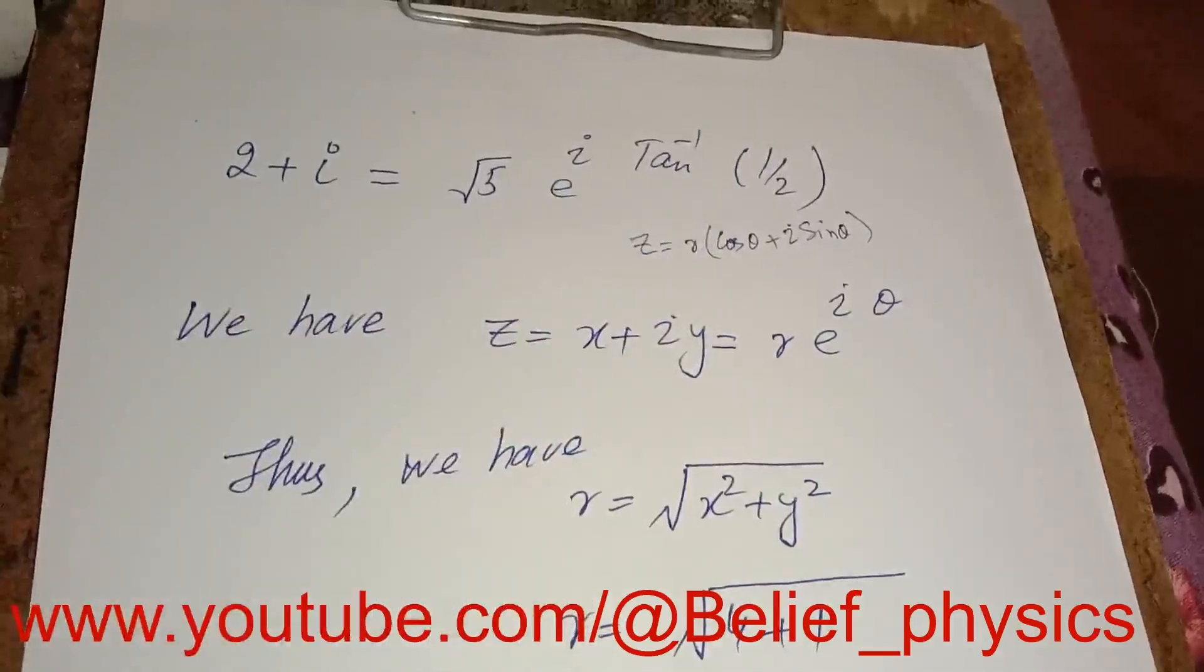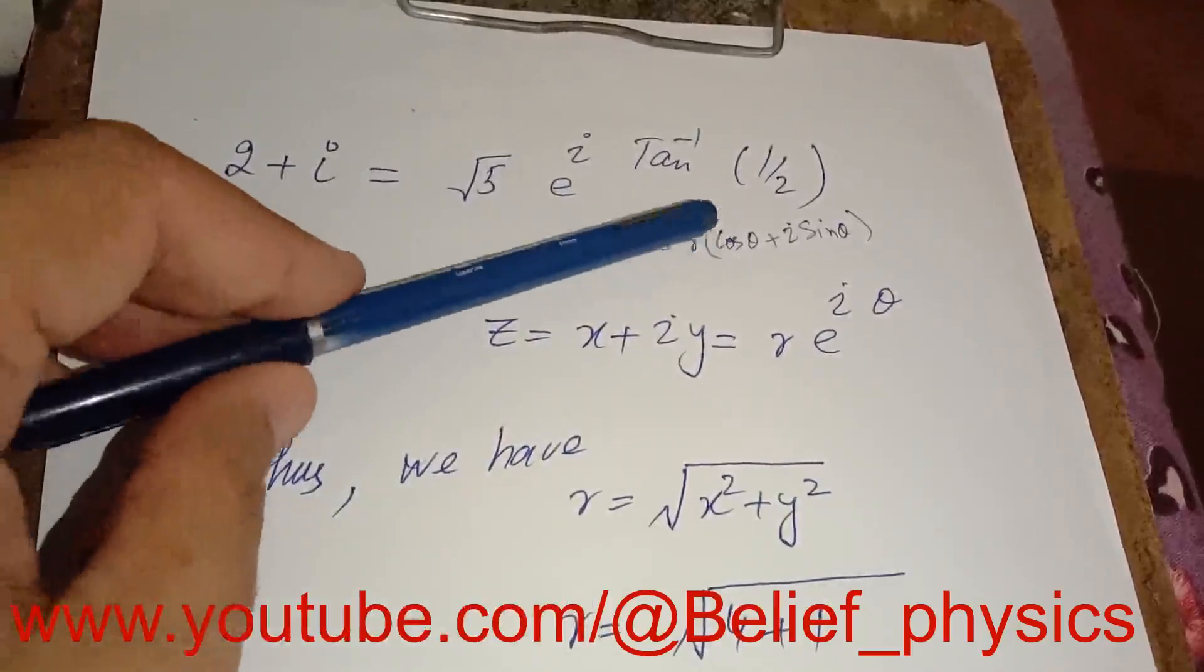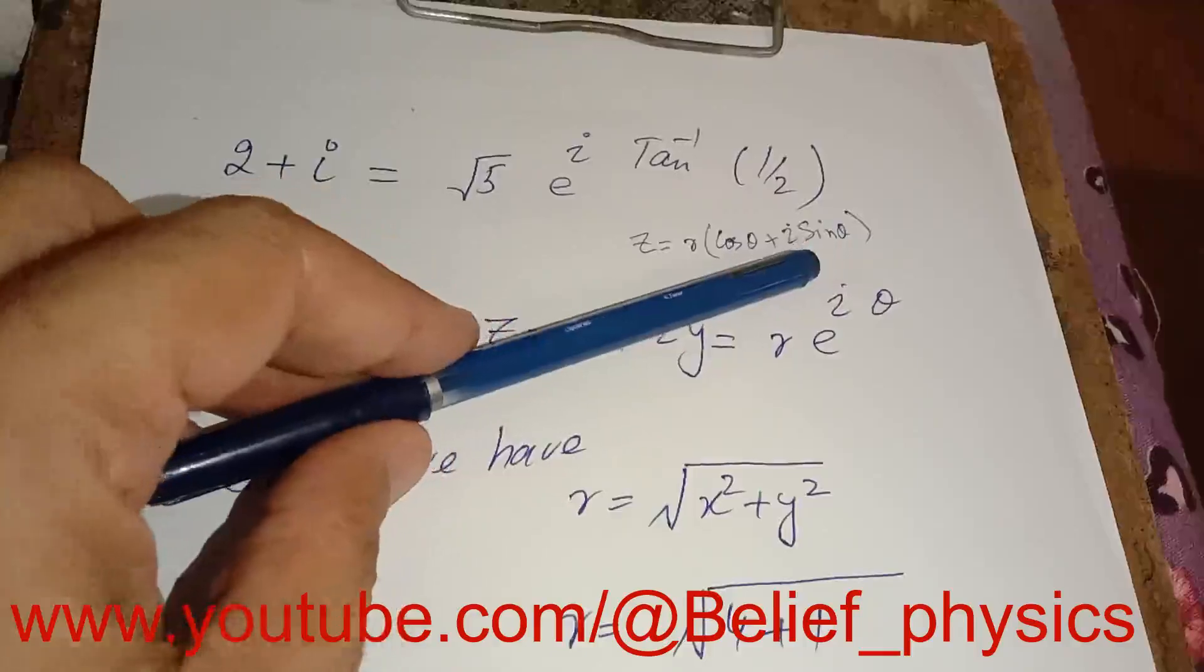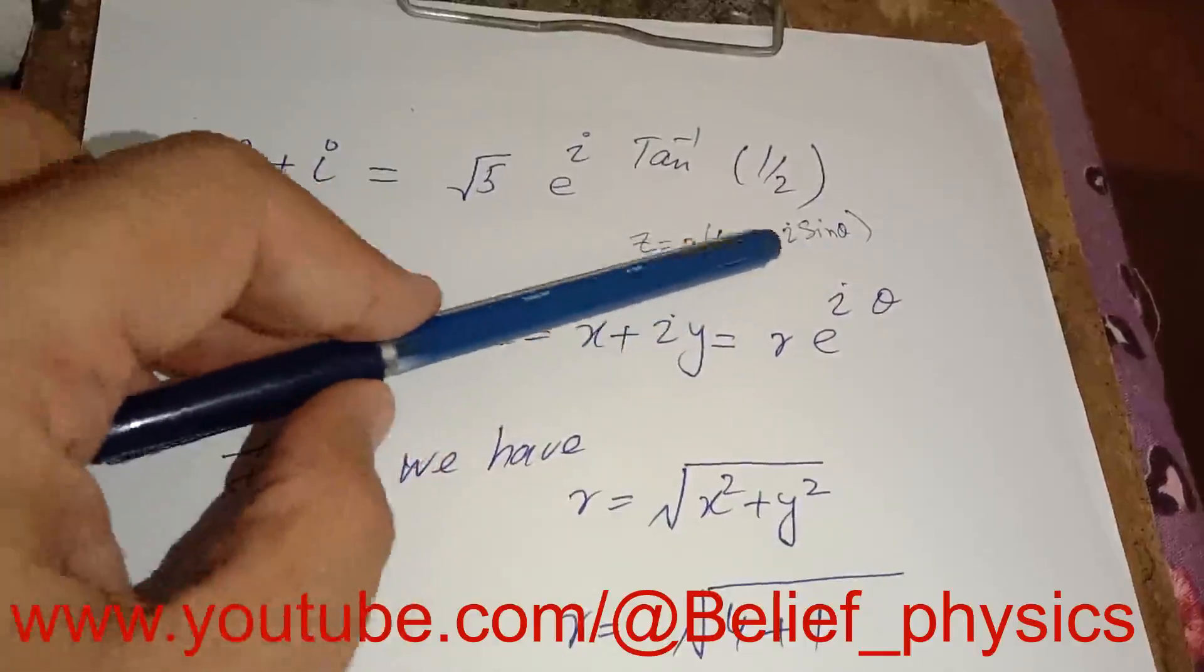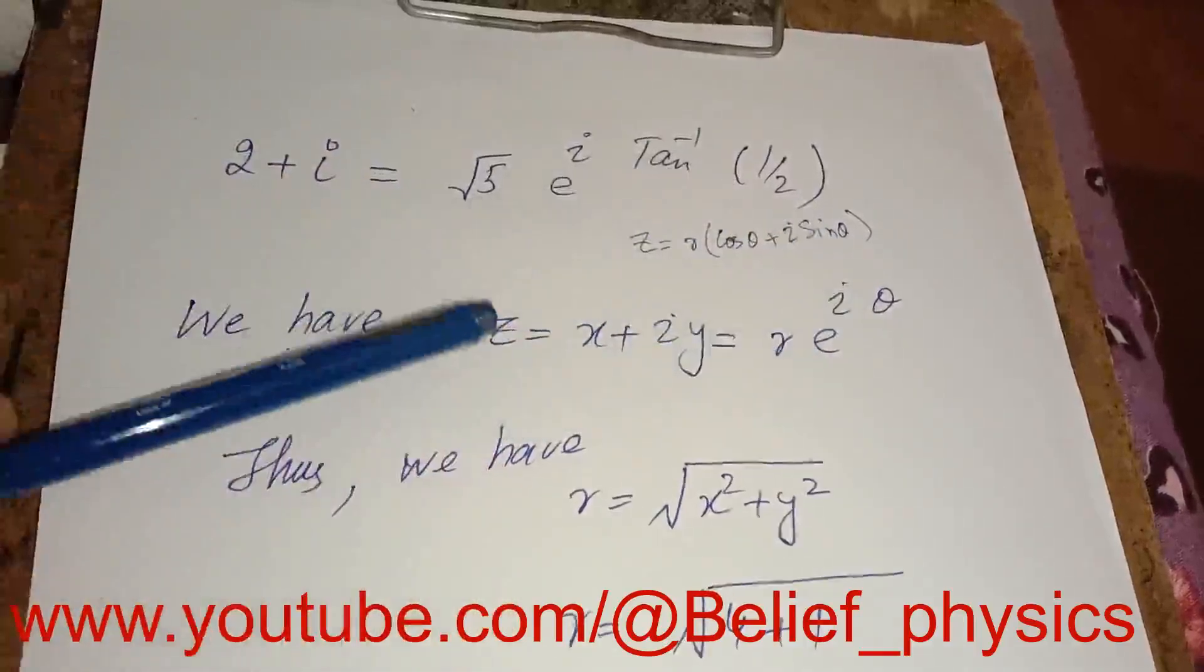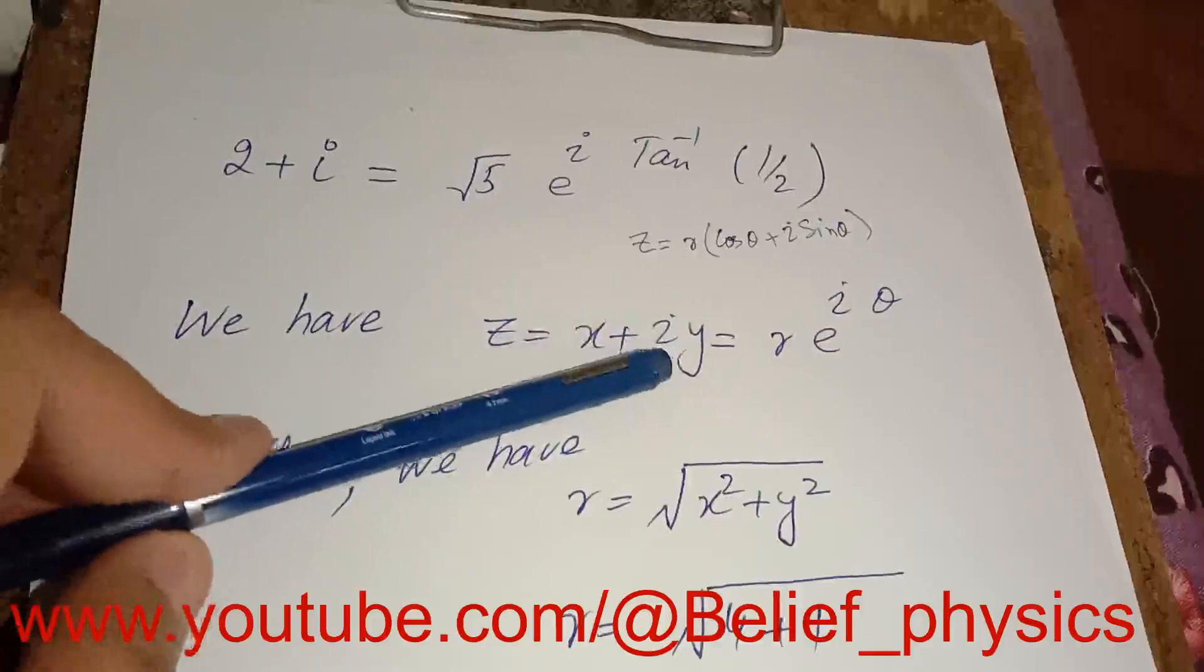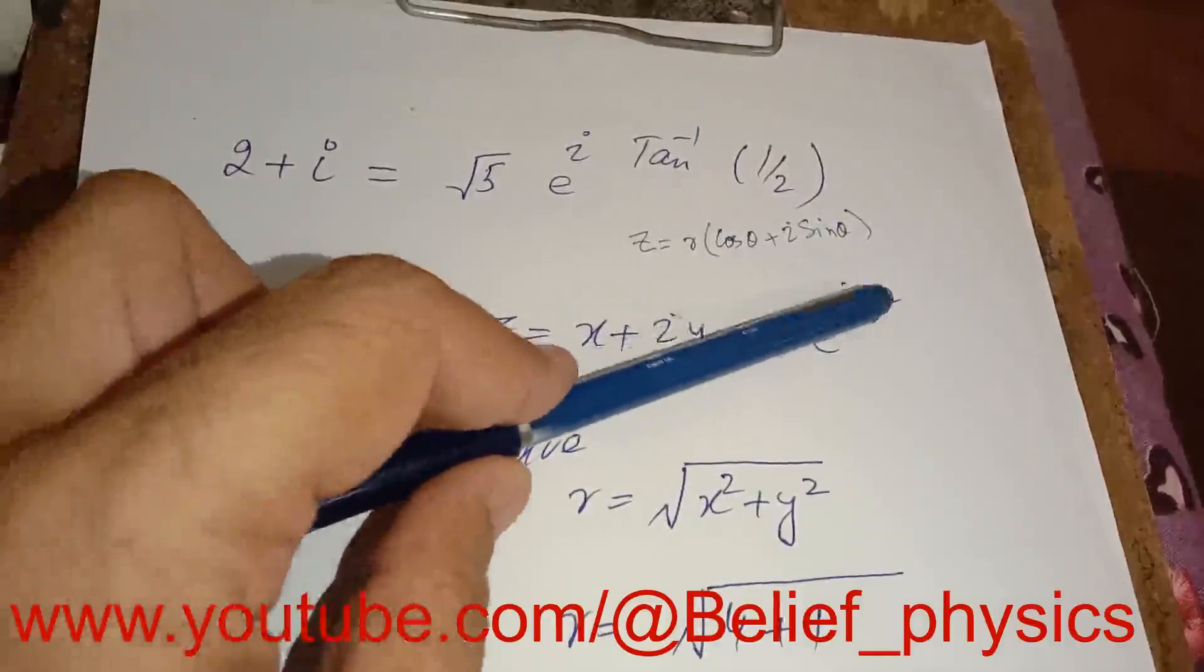Now we know that polar form of a complex number is equal to r cos theta plus iota sin theta. If we use Euler's formula, cos theta plus iota sin theta equals e power iota theta. This is why we have to prove that x plus iota y is equal to r e raised power iota theta.